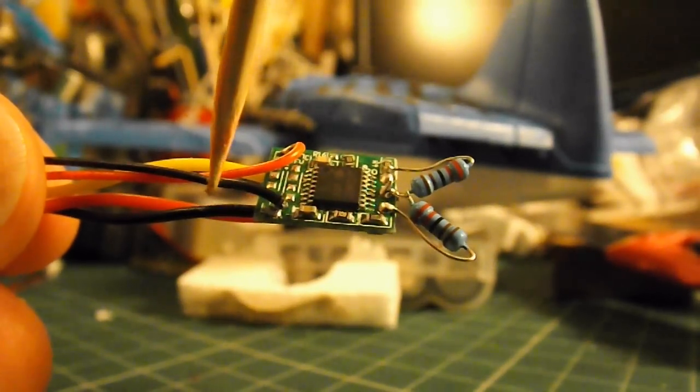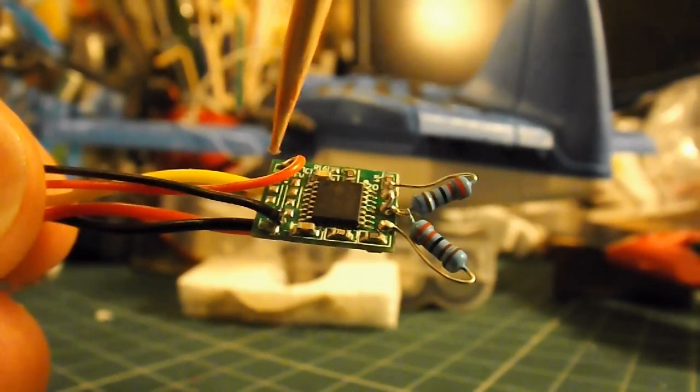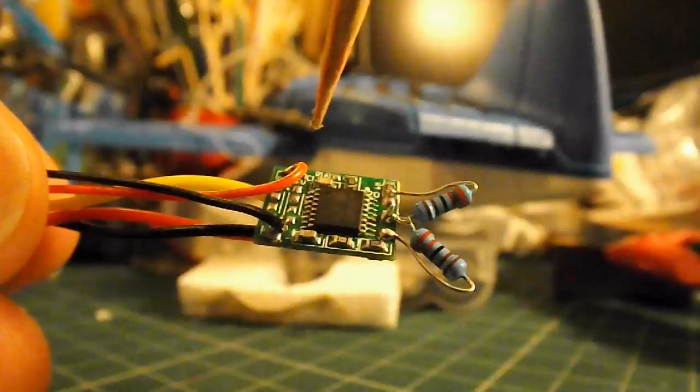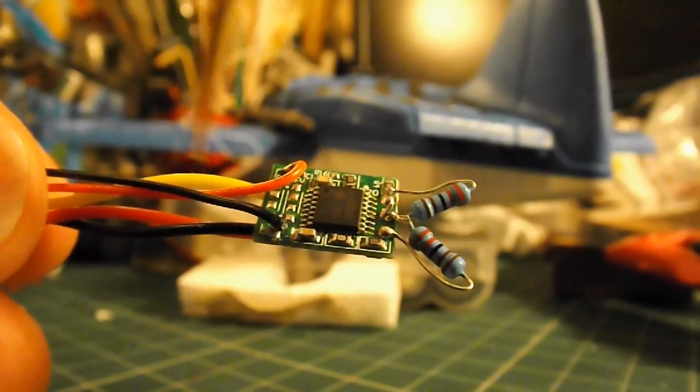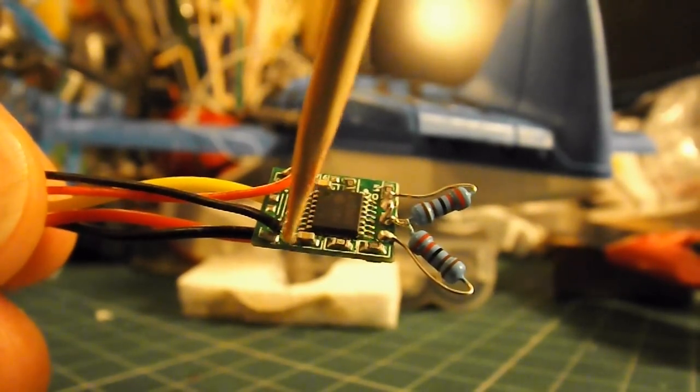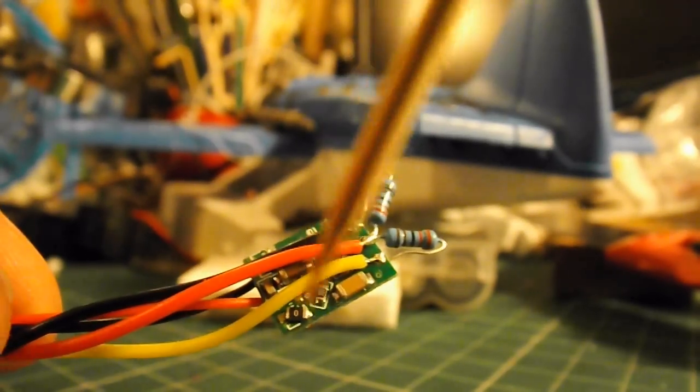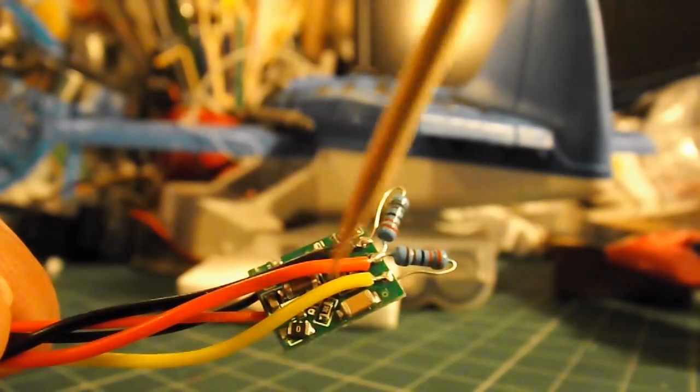The red and black wires are the ones that normally go to the servo motor - they're now going out to my external motor. And on the back there, that's the three wires that go onto the receiver.